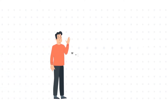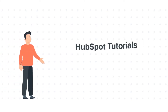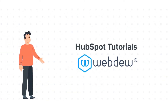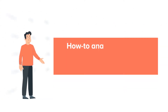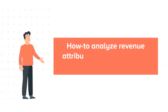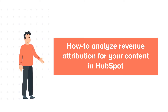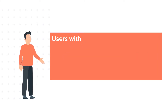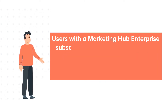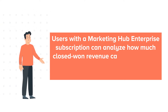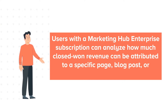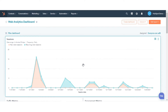Hello and welcome to HubSpot Tutorials by Webdo. This is Bob, and today's tutorial is about how to analyze revenue attribution for your content. Users with a Marketing Hub Enterprise subscription can analyze how much closed-won revenue can be attributed to a specific page, blog post, or marketing email. Let's see how you can do this.